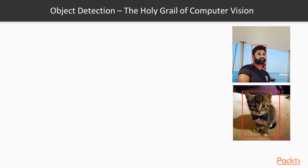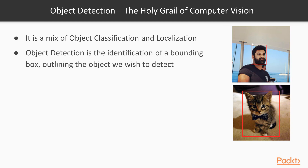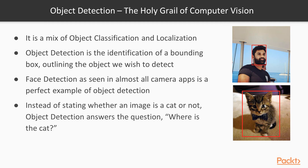Object detection is a mix of object classification and localization. Classification means determining what the object is, and localization means identifying the region or bounding box of the object. Unlike pure classification, object detection doesn't just tell you whether an image contains a cat — it also tells you where in the image the cat or other objects are located.